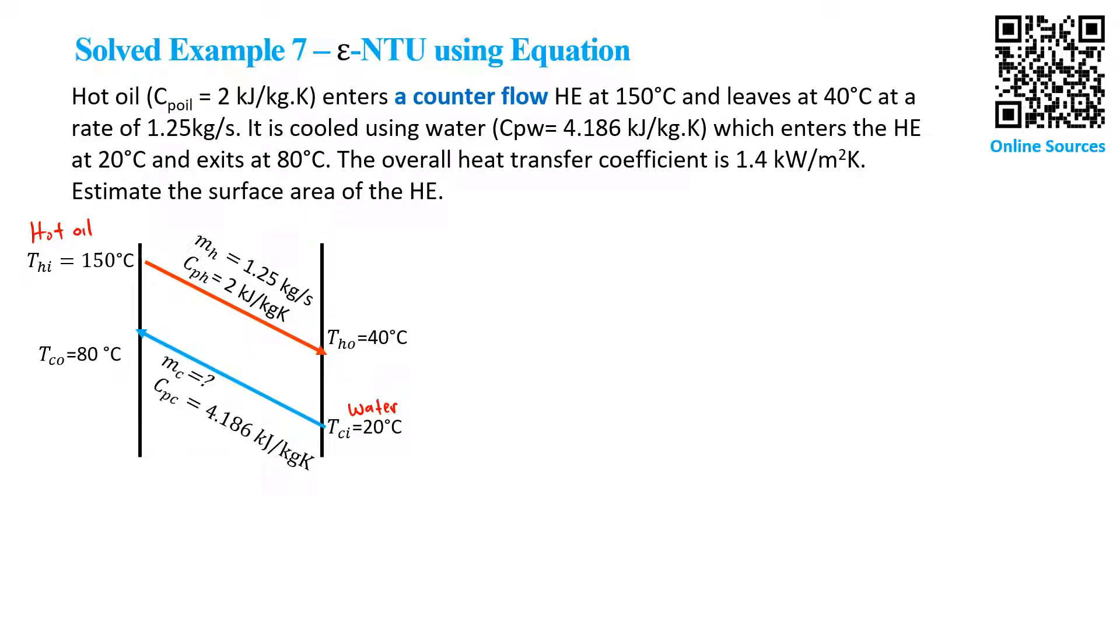We are given mH = 1.25 kg/s and CPH = 2 kJ per kg·K. On the lower side, we are given the CP of cold...